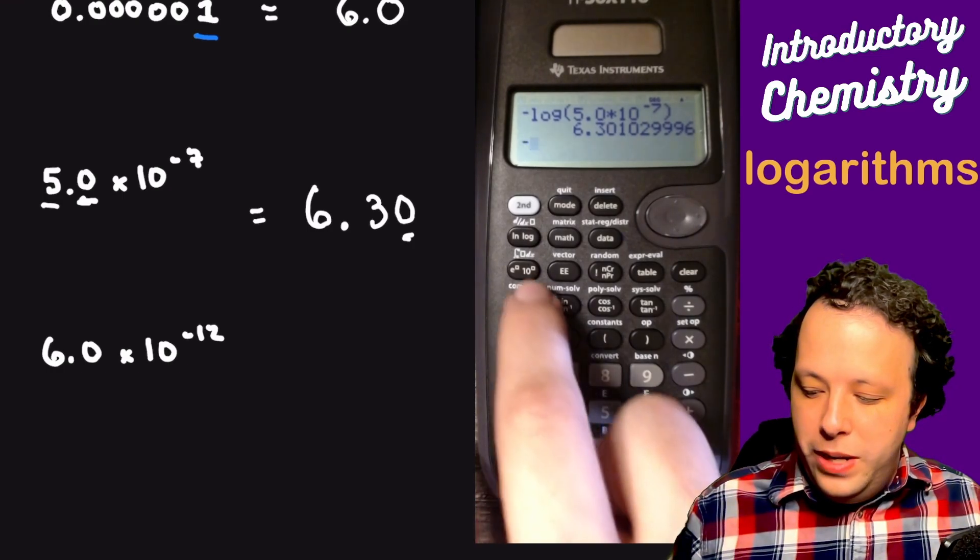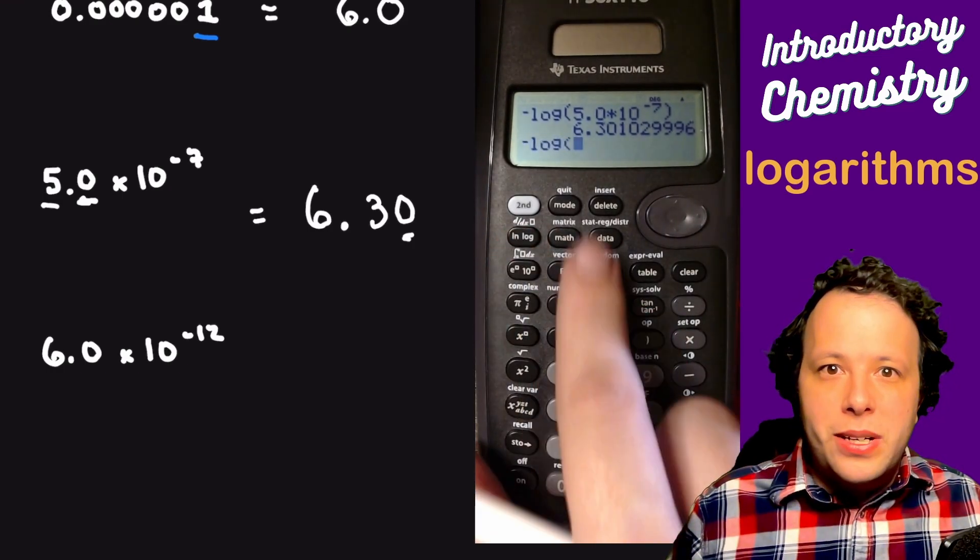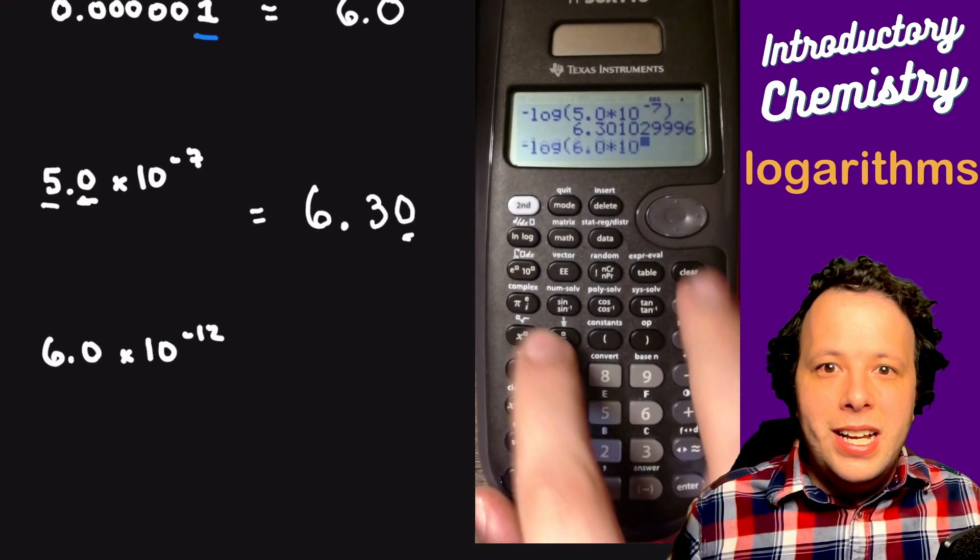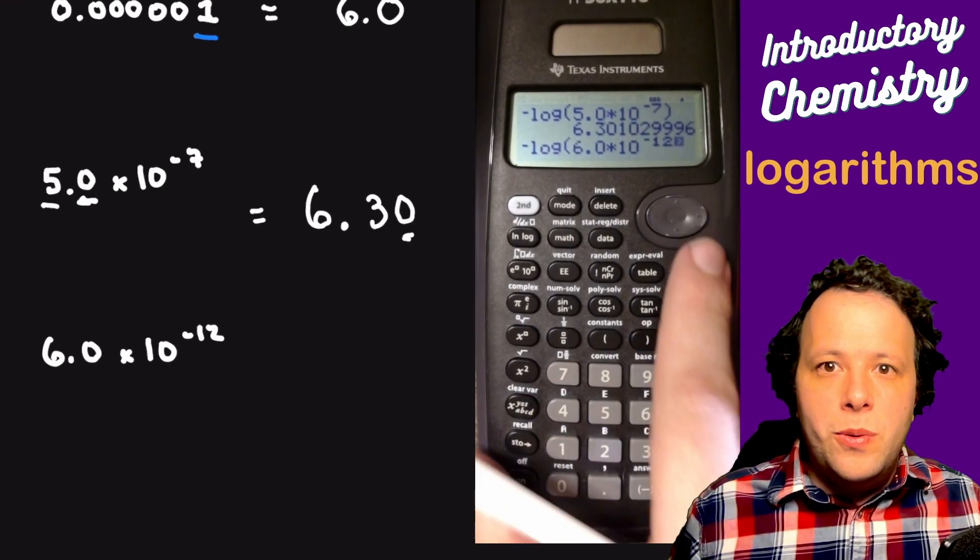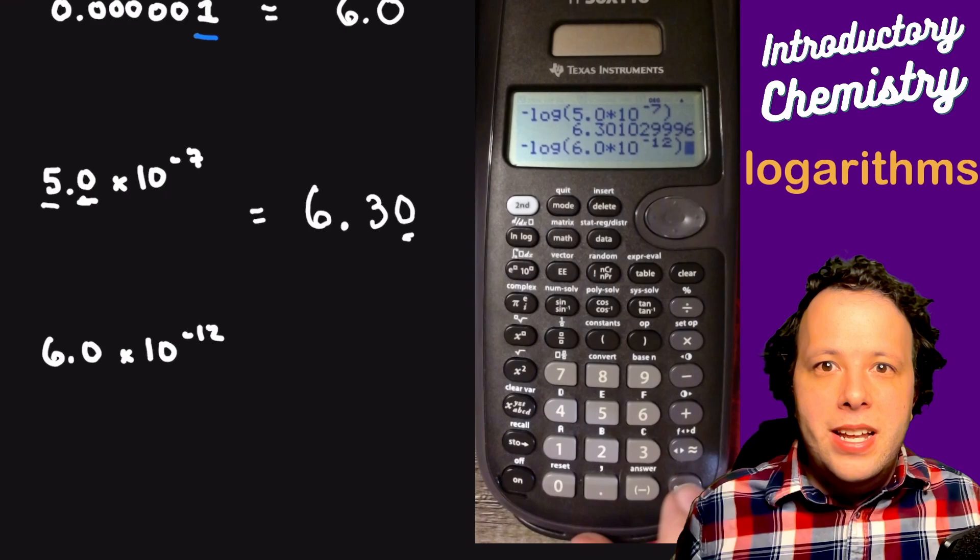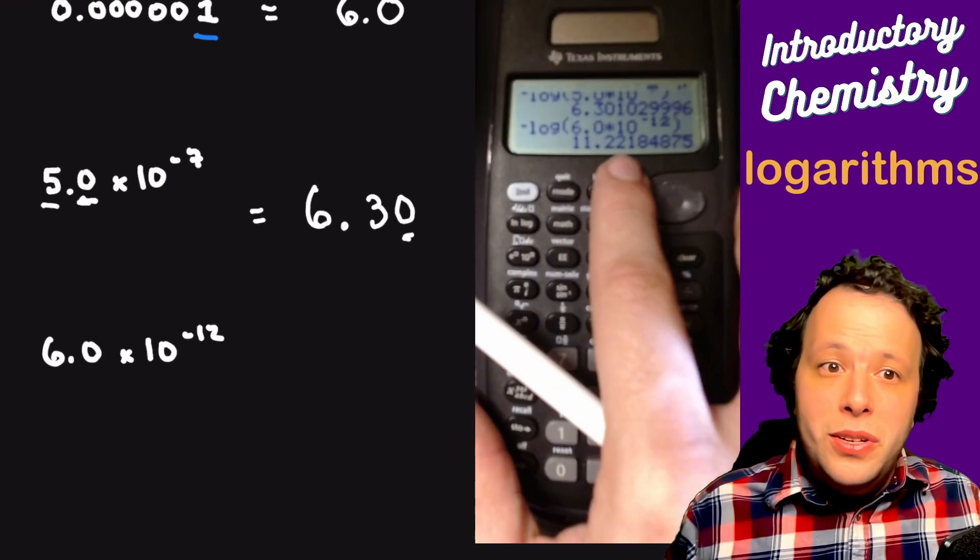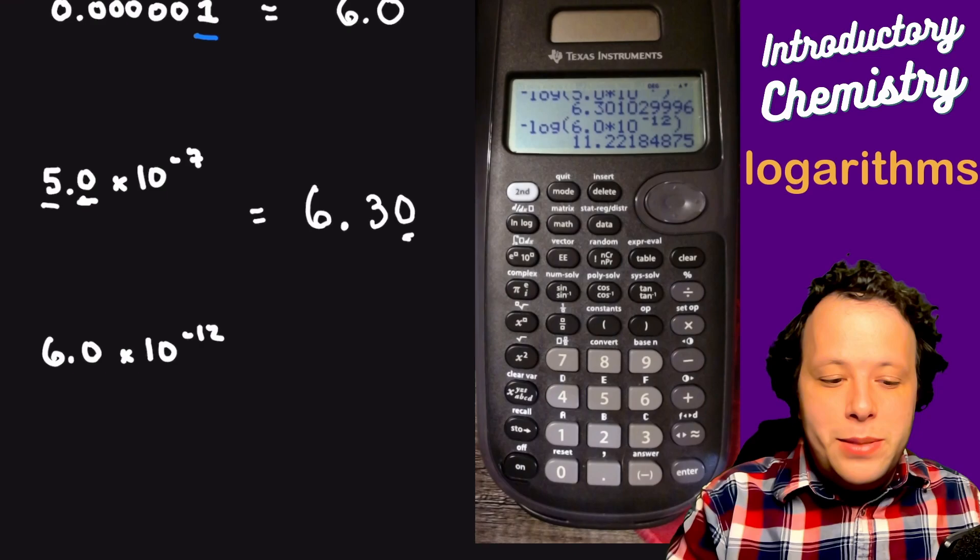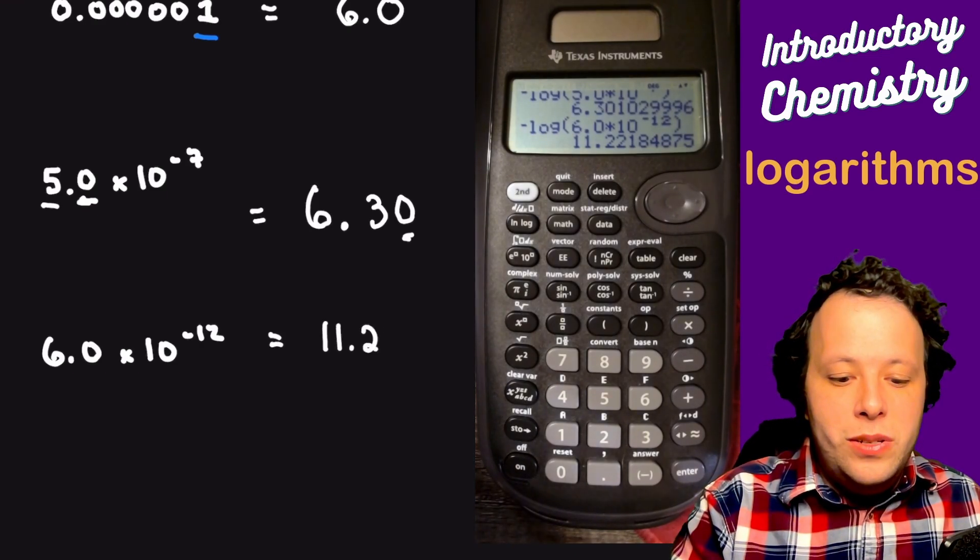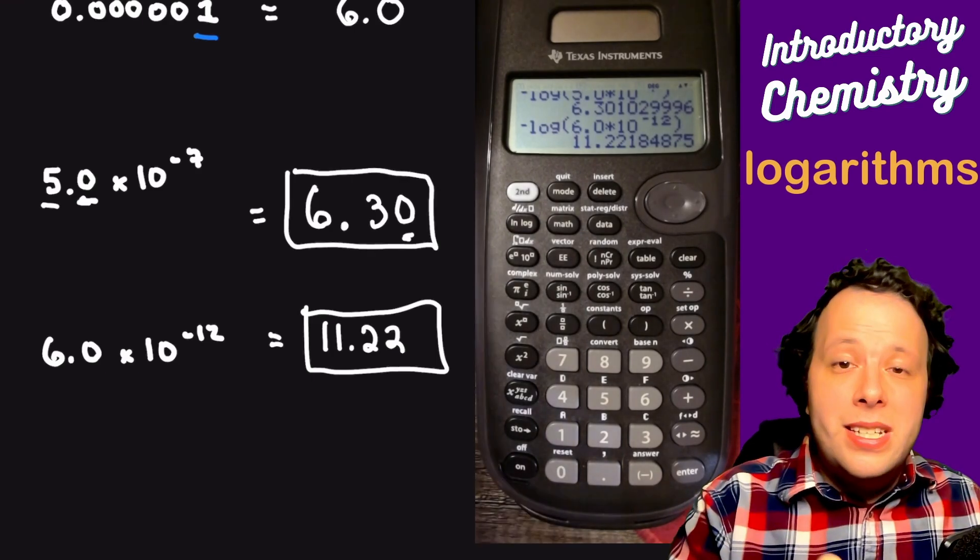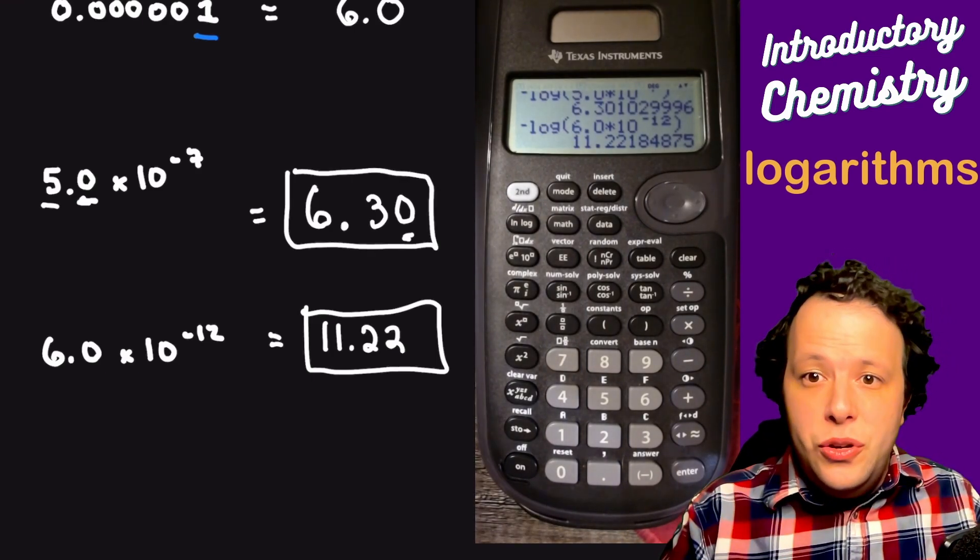Our last one, we have negative log again, we're going to plug that in at 6.0. We're going to do times 10 to the negative 12. We're going to end parentheses, and now we have our value. So currently we have 11.22. We want two decimal places, so we are going to write 11.22. So this is how you go from concentration to pH.